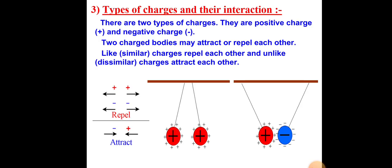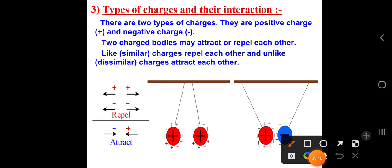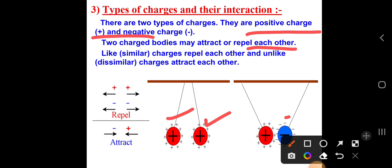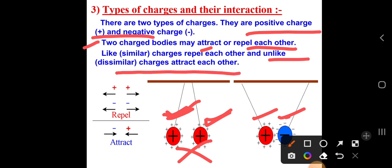Now, charges interaction: what are the types of charges? There are positive ions and negative ions — positive charge and negative charge. Two charged bodies may attract or repel each other. When charges are of the same kind — positive and positive — they repel each other. When charges are of different signs — positive and negative — they attract each other. Like charges repel and unlike charges attract.